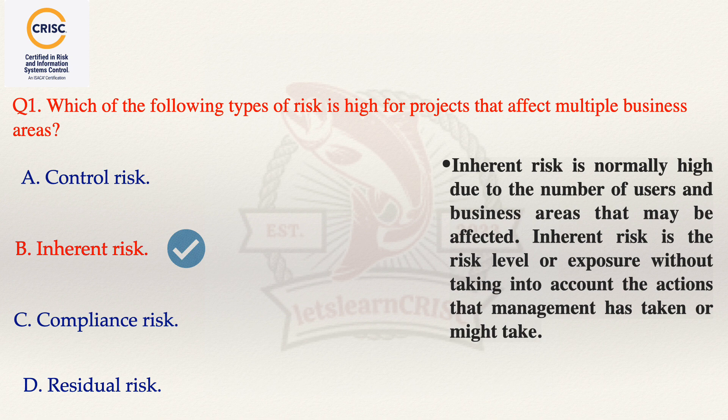Moving to option C, that is compliance risk. This option is also incorrect because compliance risk is the penalty applied to current and future earnings for non-conformance to laws and regulations, and may not be impacted by the number of users and business areas affected.